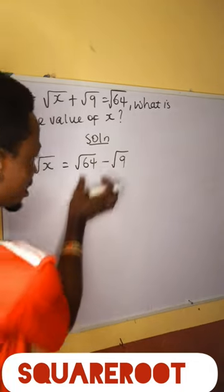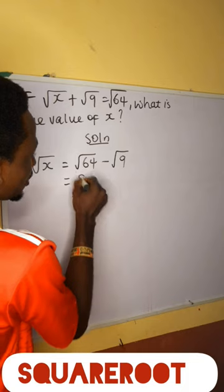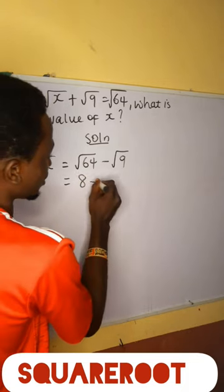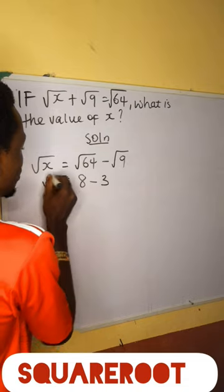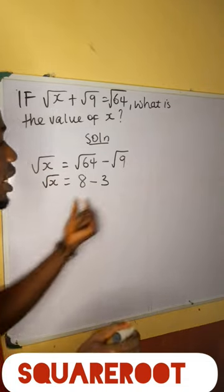So I can simplify this. The square root of 64 is 8, and the square root of 9 is 3. So this is 8 minus 3. So that means the square root of x is equal to 8 minus 3.